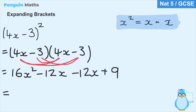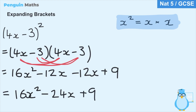We can now combine the minus 12x and minus 12x together: 16x squared minus 12x minus 12x gives us minus 24x, and then we have plus 9 at the end. So the expression at the top expands and simplifies to 16x squared minus 24x plus 9.